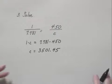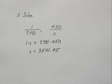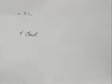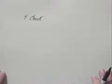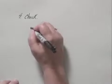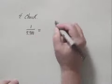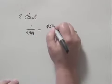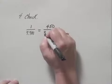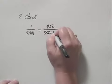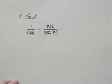So we have a possible solution and we move to step four, which is to check our answer. To check, we could actually rewrite the proportion. We have 1 over 7.781. Does that equal 450 over 3,501.45?